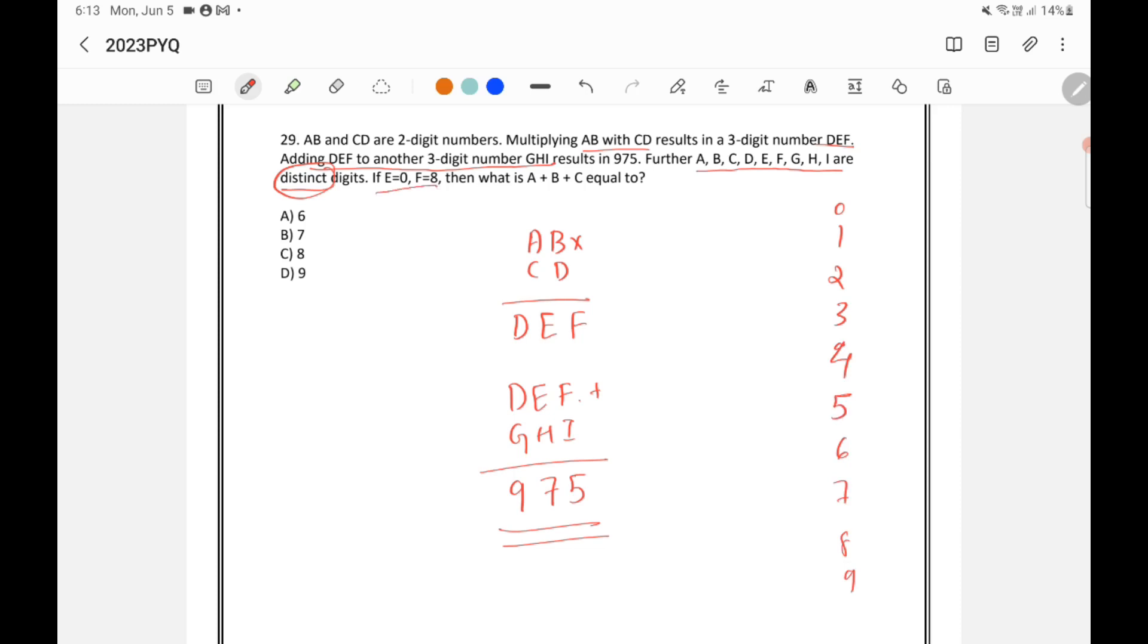Now it is already given that E is equal to 0 and F is equal to 8. So in place of E I can write 0 and in place of F I can write 8. And I cannot use the 0 and 8 for any other alphabets because they are distinct. I can only use any of this digit only once. So I can cancel out the 0 and 8 because I cannot use it anymore.